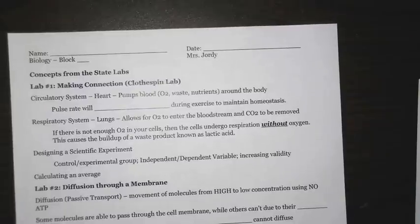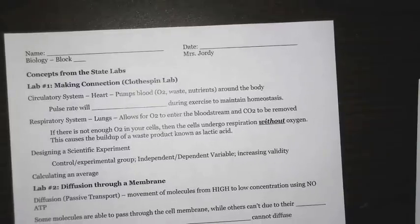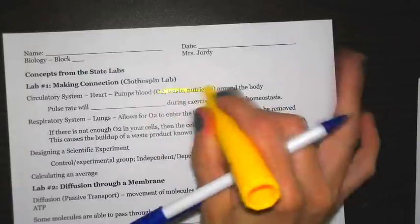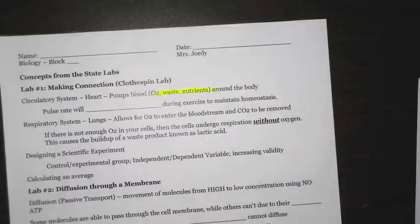A big thing they like to talk about is your two systems that are going to be affected by that. The first one is your circulatory system. The main organ of the circulatory system is going to be your heart, which is connected to your blood vessels and is responsible for pumping blood around the body. What is actually inside your blood? Your blood contains oxygen, waste, and nutrients.